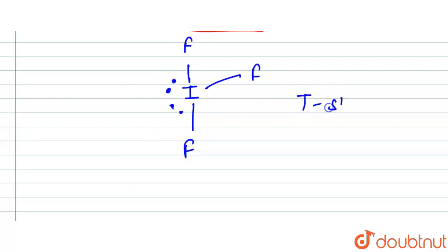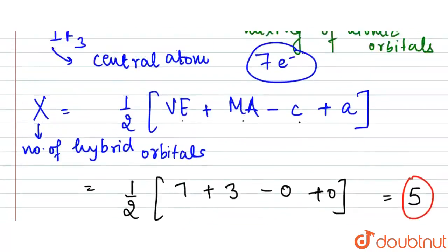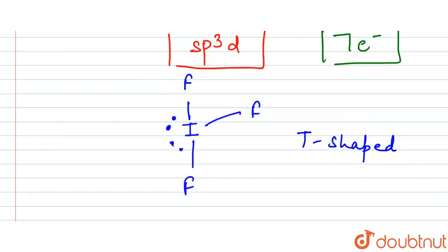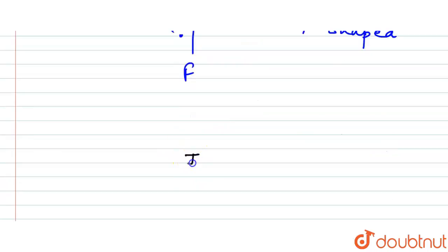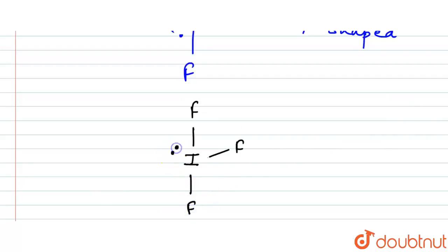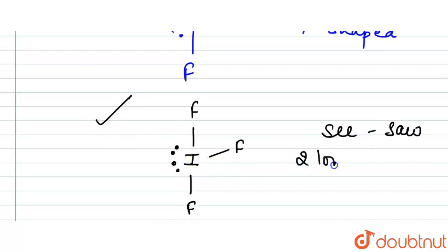This arrangement gives a T-shaped geometry. Clearly, iodine is at the center bonded to three fluorine atoms — two lone pairs and three bond pairs. The shape is T-shaped, sometimes also described as a see-saw representation. This is the required structure of IF₃, with two lone pairs and three bond pairs.